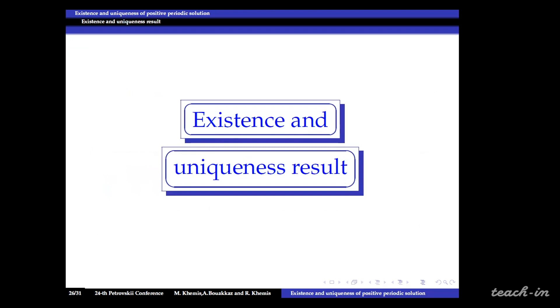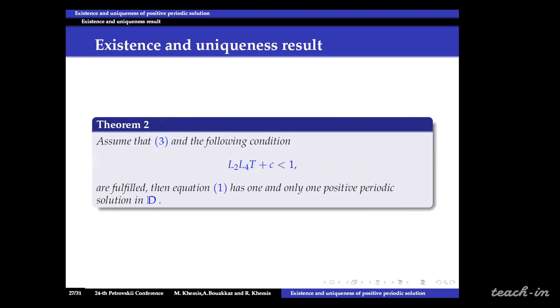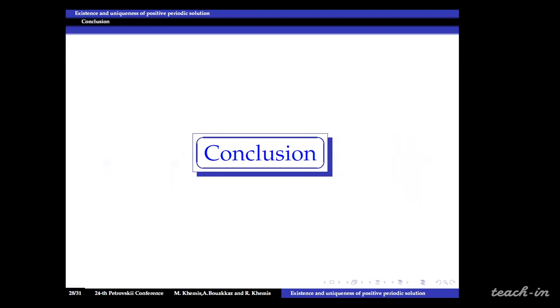Now moving on to the fourth part. For the existence and uniqueness results under the Lipschitz condition and this estimate, then the mapping R1 plus R2 is a contraction. So by virtue of Banach contraction principle, we can deduce that equation 1 has one and only one positive periodic solution. To conclude I would like to recap the main steps followed in establishing our main findings.